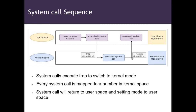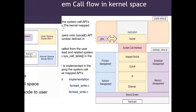The return to user space is done by setting the mode bit to one — zero is for kernel space, one is for user space. So: the system call executes a trap to switch to kernel mode, every system call is mapped to a number in kernel space, and the system call returns to user space by setting the mode bit to user space. This is the high-level view of how a system call is executed. We'll discuss the deeper implementation next.